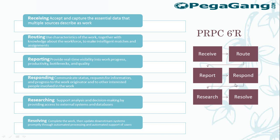So how does Pega deliver BPM product features? Every feature of Pega can be mapped to a concept called the Six Rs: Receive, Route, Report, Response, Research, and Resolve.